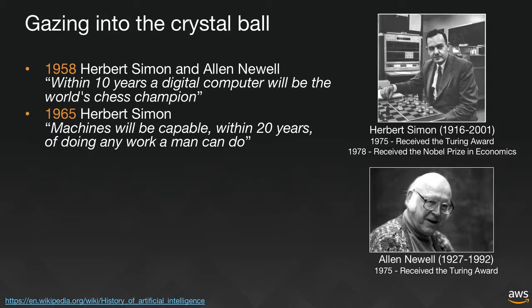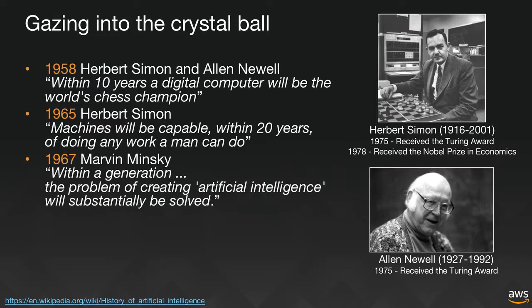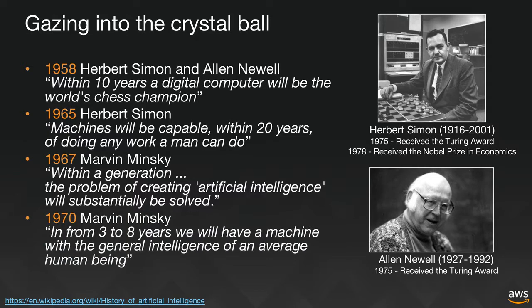But those predictions turned out to be horribly wrong. In 1965 they thought within 10 years a machine would be capable of doing anything a human could do. Another top scientist, Marvin Minsky, thought that within a generation we would solve all kinds of problems with AI — even going as far as saying that by the end of the 70s we could build a computer with the general intelligence of an average human being. No system ever came near that level. Lots of completely incorrect predictions by extremely bright people.